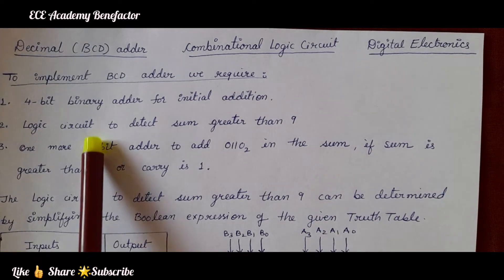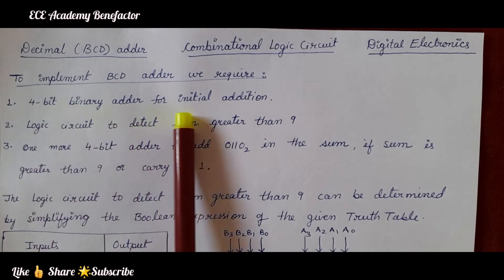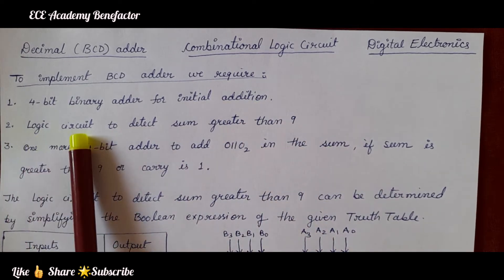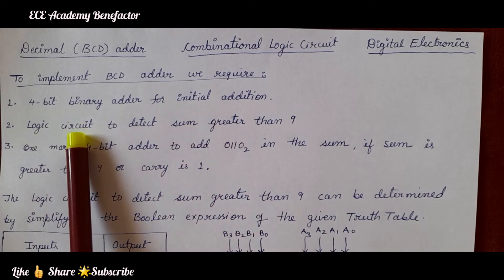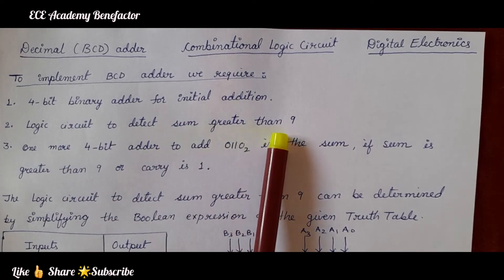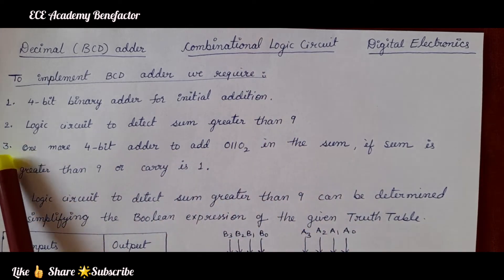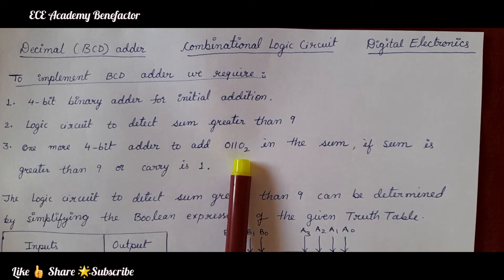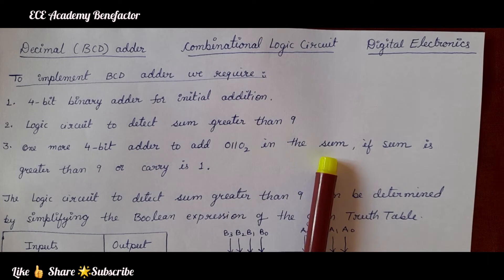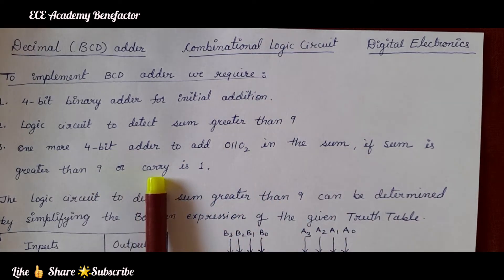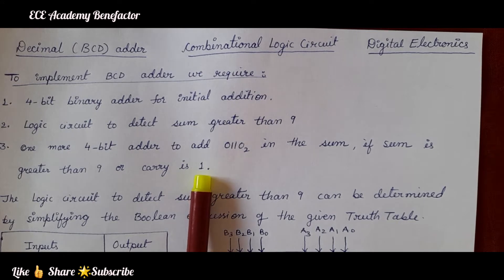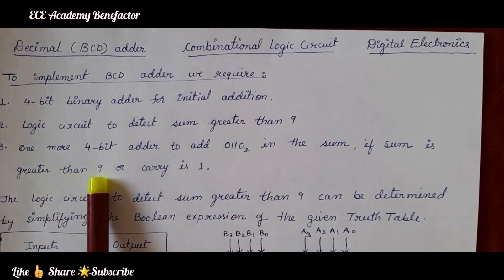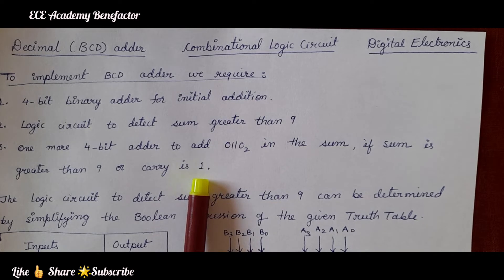These are the three steps. First, we need a 4-bit binary adder for initial addition. After addition, we need a second logic circuit to detect whether the sum is greater than 9. Third step, we need one more 4-bit adder to add 0110, which means 6, to the sum, if the sum is greater than 9 or carry is 1.